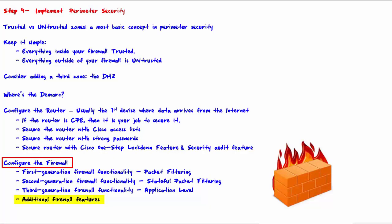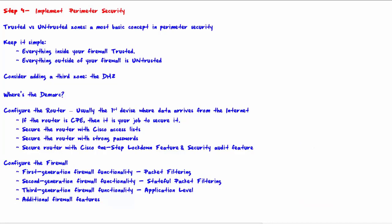Many firewalls include additional security features beyond the three generations, such as VPN capabilities, content filtering — which allows you to block end users on your LAN from accessing certain websites — gateway antivirus, intrusion prevention, anti-spyware, and logging and alerts. Even though these are not part of the generation classifications, they are features that many firewalls give you, and you definitely want to take advantage of those. That is the end of this video — we will see you in step five.